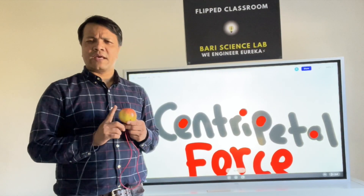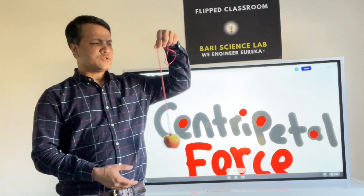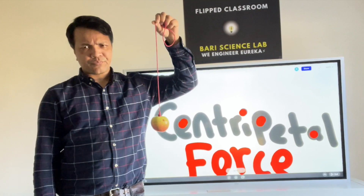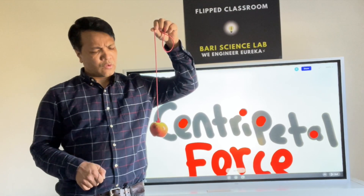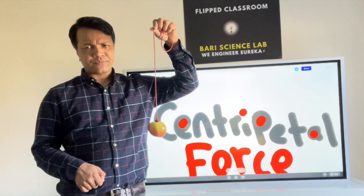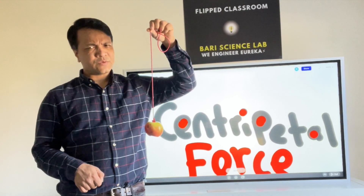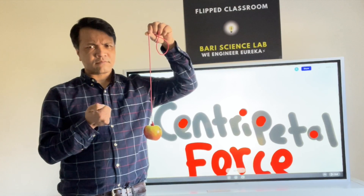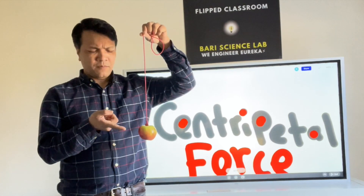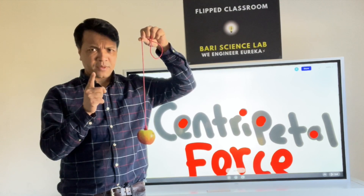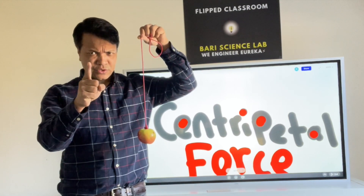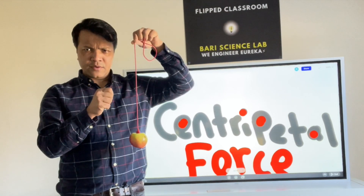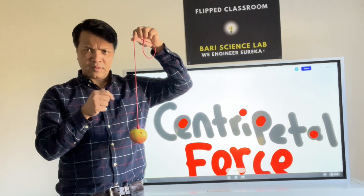Let's consider a rope and a mass hanging on a rope. I'm going to model the moon and earth. I'm going to apply some force — my hand is going to apply some force on the rope. Understand that a rope can only pull; it does not push.